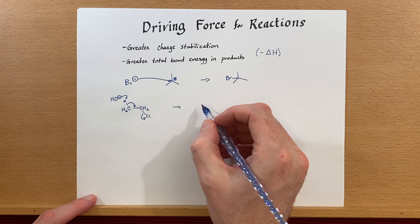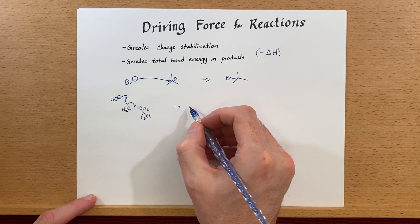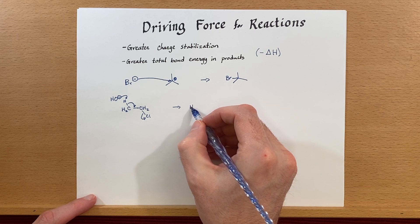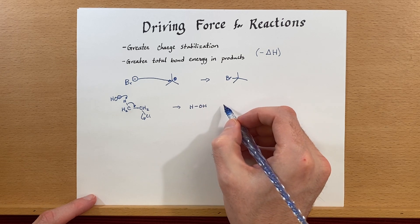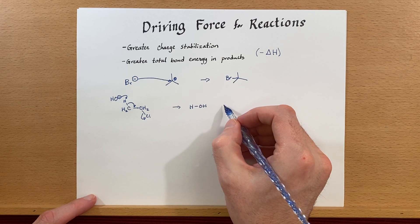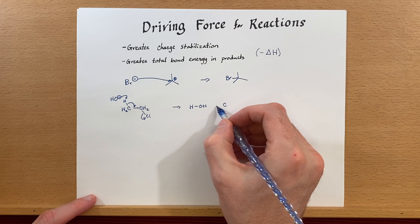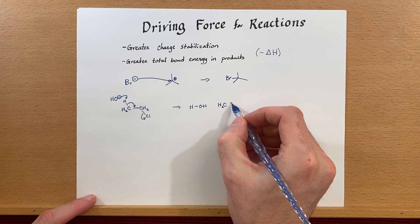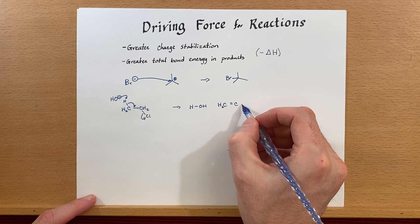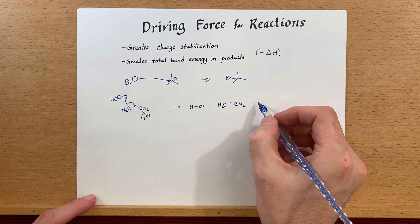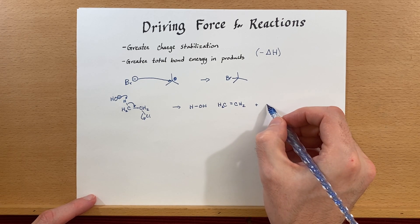Now, let's look at the products that we're making. We're making water, and we're making ethene, which has a double bond there, and we're making a chloride.